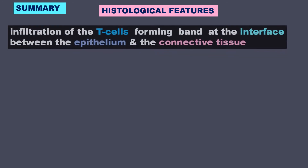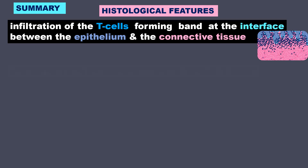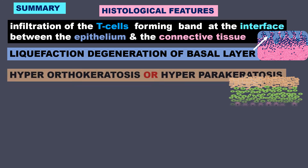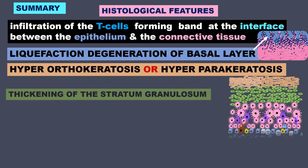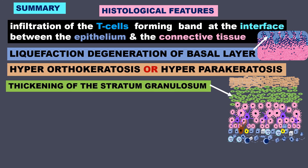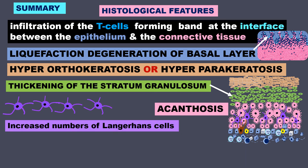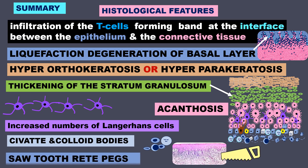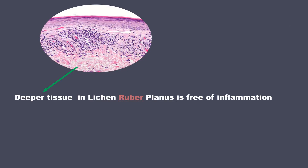Let us do a quick summary of the histological features: infiltration of T cells forming a band at the interface between epithelium and connective tissue; liquefaction degeneration of the basal layer; hyperorthokeratosis or hyperparakeratosis; thickening of the stratum granulosum; acanthosis; increased number of Langerhans cells; Civatte and colloid bodies; saw-tooth rete pegs. Another important feature to remember is that deeper tissue in lichen ruber planus is free of inflammation.